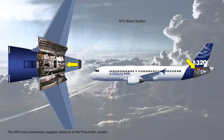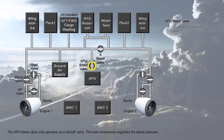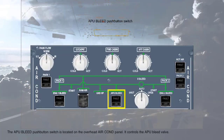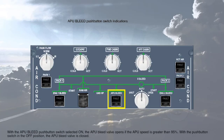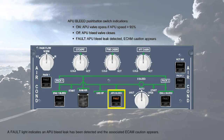The APU load compressor supplies bleed air to the pneumatic system. The APU bleed valve only operates as a shut-off valve; the load compressor regulates the bleed pressure. The APU bleed push-button switch is located on the overhead air conditioning panel and controls the APU bleed valve. With the APU bleed push-button switch selected on, the APU bleed valve opens if the APU speed is greater than 95%. With the push-button switch in the OFF position, the APU bleed valve is closed. A fault light indicates an APU bleed leak has been detected and the associated ECAM caution appears.